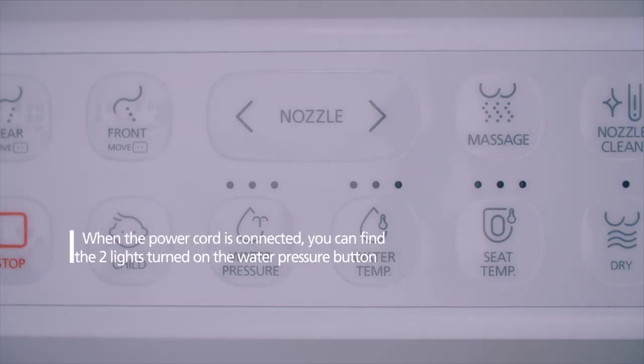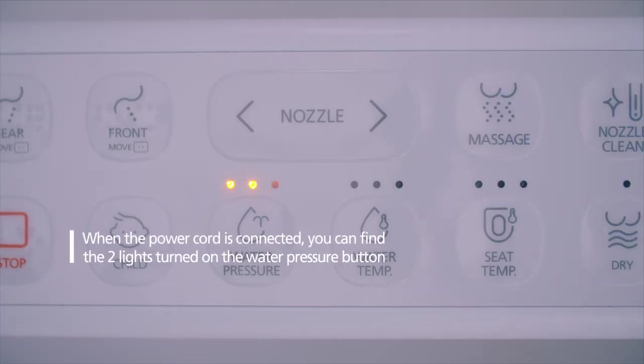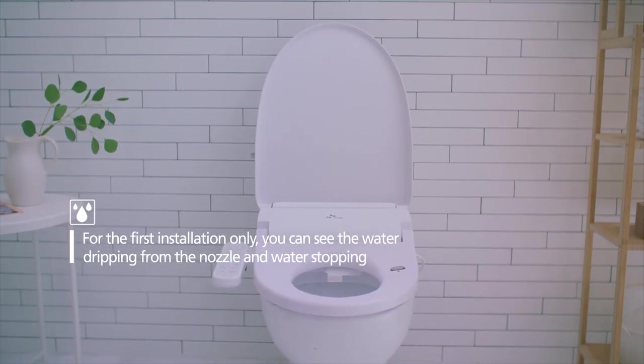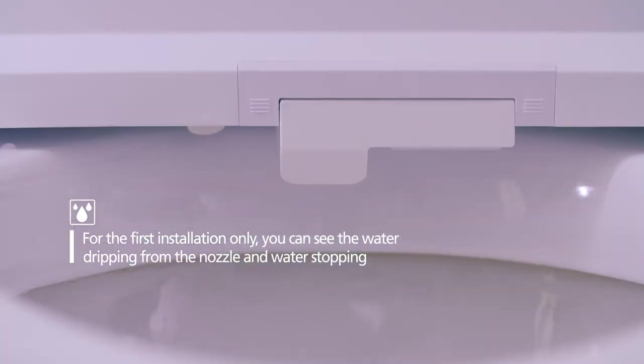When the power cord is connected, you can find the two lights turned on the water pressure button. For the first installation only, if the bidet seat is properly installed and connected, the bidet tank will be filled with water after one or two minutes, and you can see the water dripping from the nozzle and the water stopping.